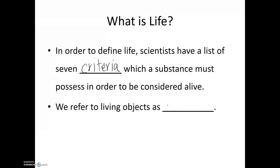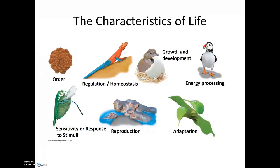We refer to living objects as organisms. These seven characteristics of life include order, which is most often seen within the cell and the organization of the cell; regulation or homeostasis, being able to maintain stable internal conditions; growth and development of living organisms; energy processing; and sensitivity or response to stimulus. These are the characteristics essential for individuals. For a population, we also include reproduction and adaptation.